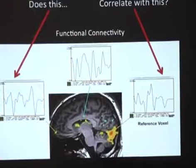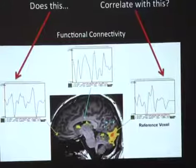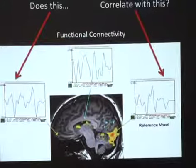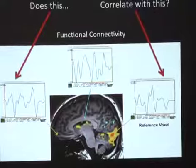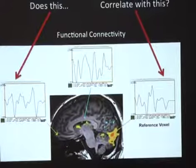Functional connectivity is best suited for resting state data. You can apply it to task-based analyses as well, but then there are other sources of variance that you're not necessarily accounting for, so it may not be best to do in a task situation. You can still do it — no one's going to stop you — though some people might complain.